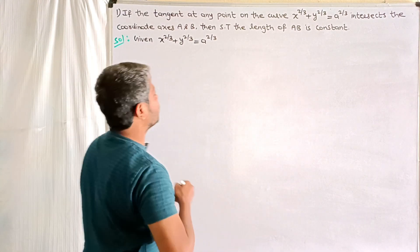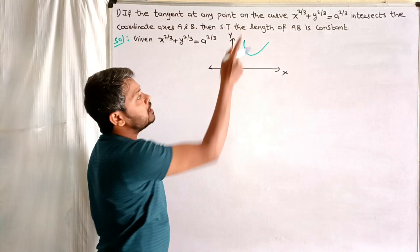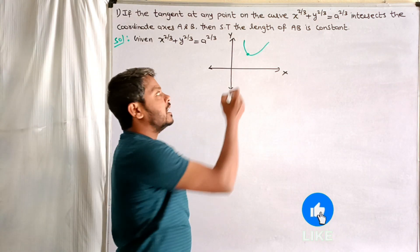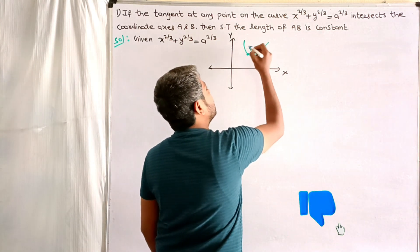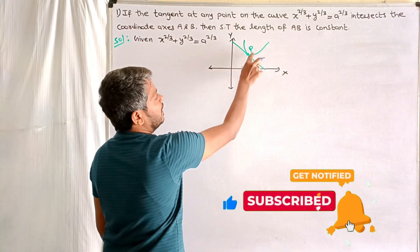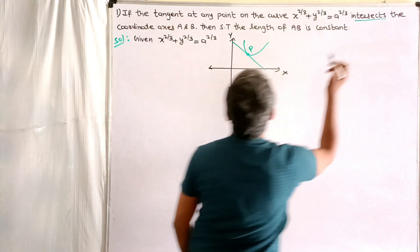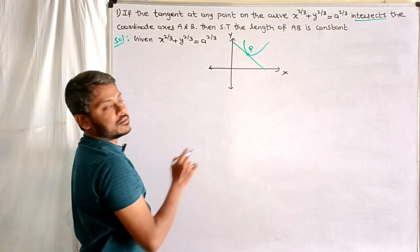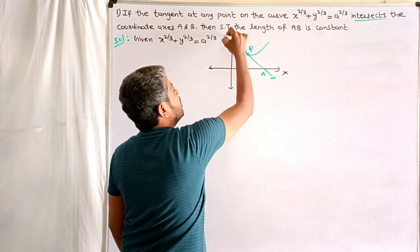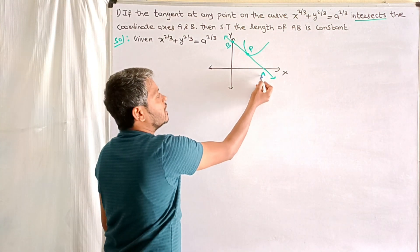Consider any point P on the curve and draw the tangent line at point P. This tangent line at any point P on the curve intersects the coordinate axes — the x-axis at A and the y-axis at B. Then show that the length AB is constant.